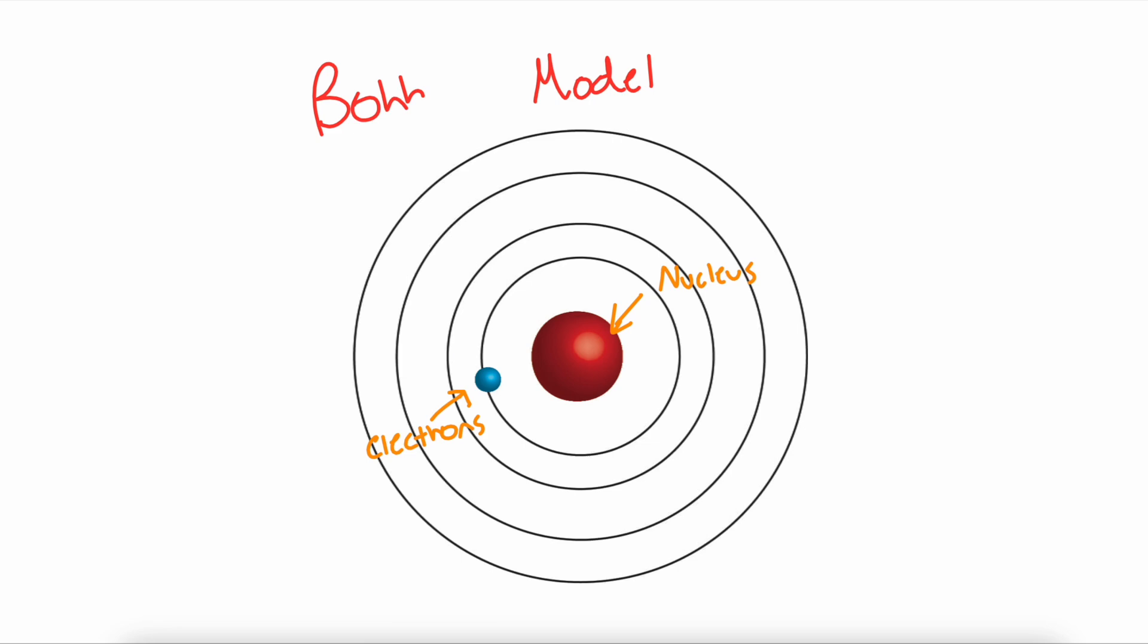Later models refined this idea to describe orbitals, regions within these shells where electrons are most likely to be found. Shells are an idea that belong to the Bohr model, and orbitals belong to the quantum model, which is our latest understanding of atoms. We use both of these with one another.